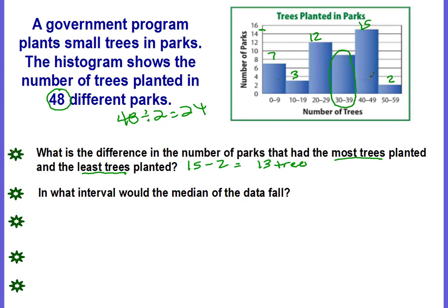And you can go backwards, start from the high. We have 2 parks and 15 parks. That's going to be 17 parks. And again, the 24th park would lie in the interval of the 30 to 39. So in which interval would it fall? The interval of the 30 to 39 trees.